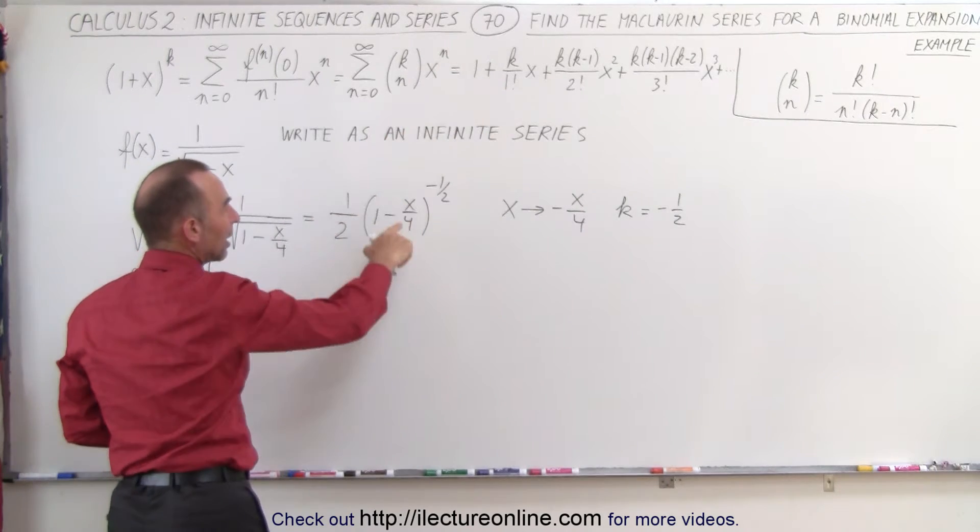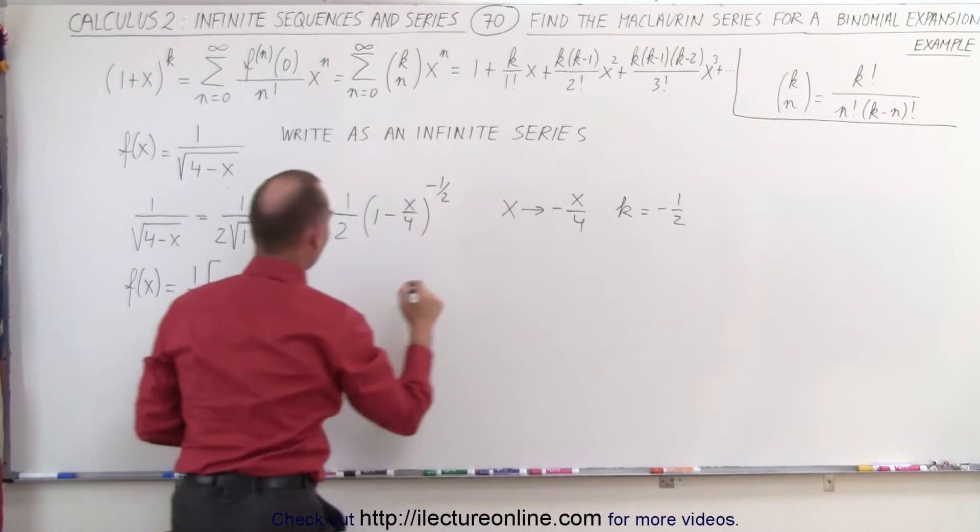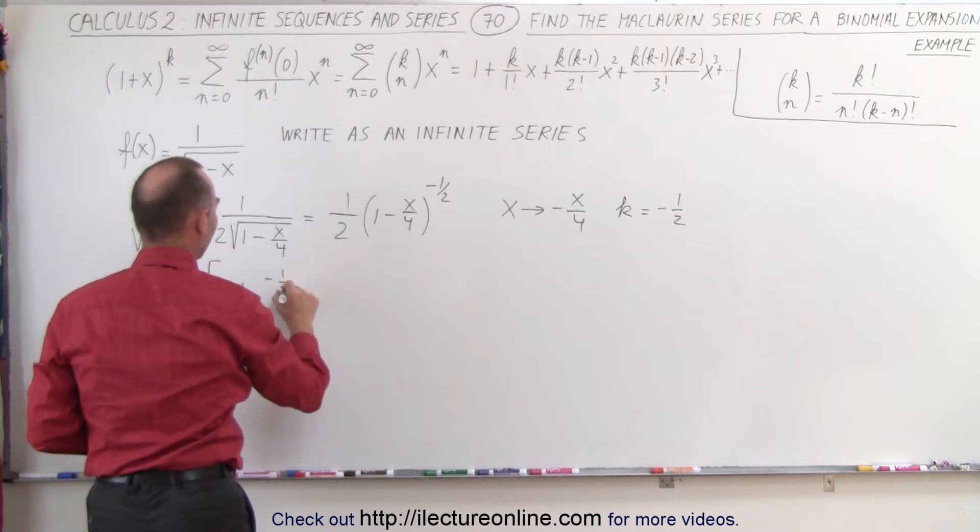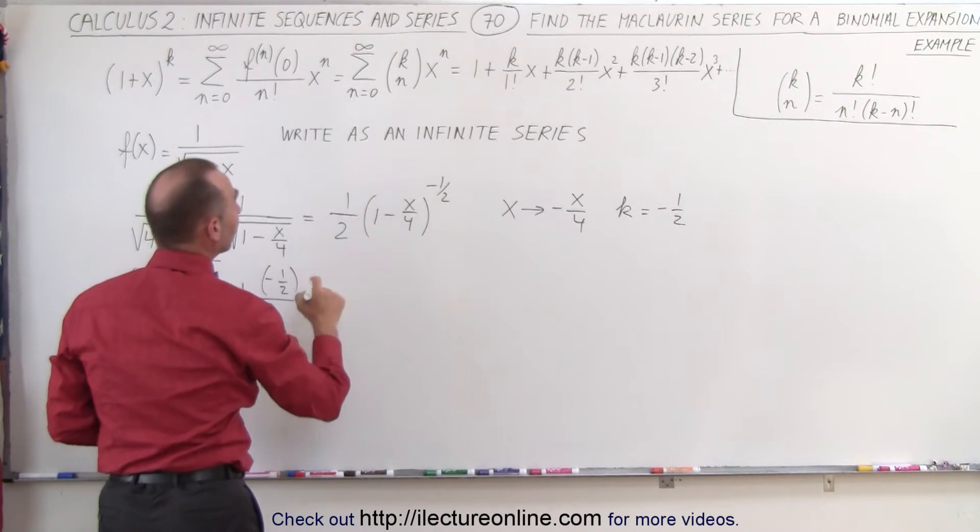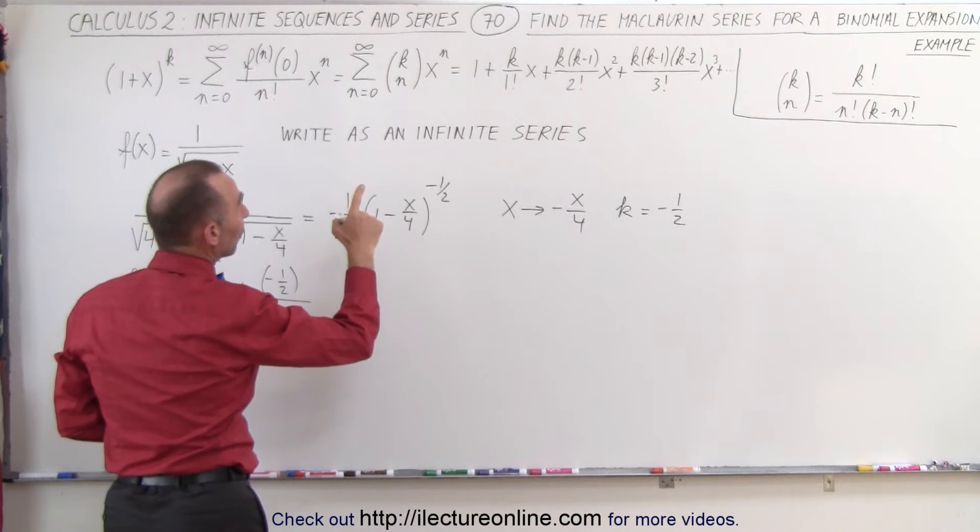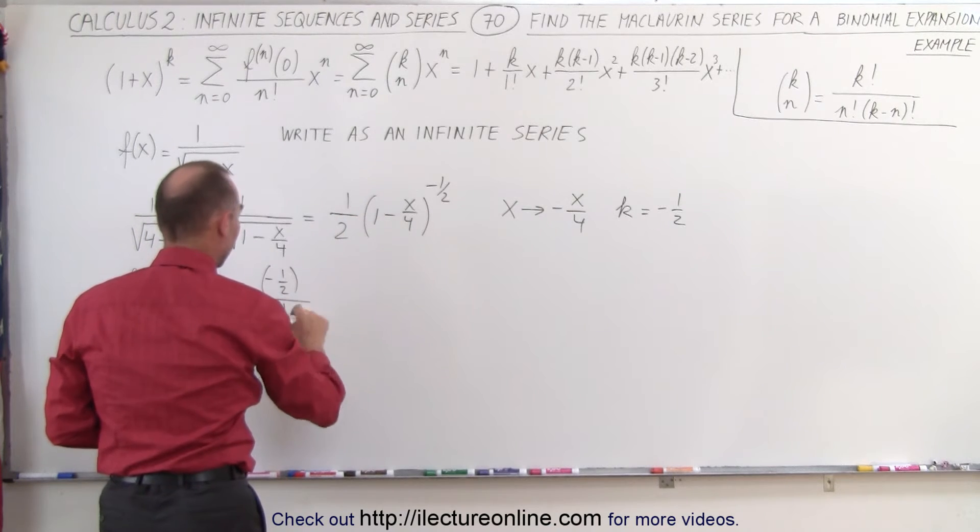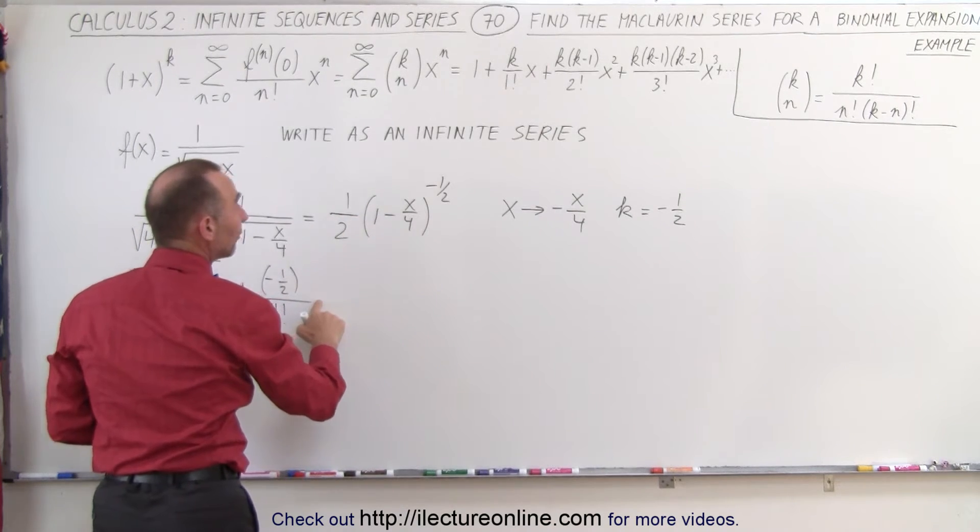Then we have plus k. Now k is minus 1 half. So we write minus 1 half divided by 1 factorial and this becomes instead of x we're going to write minus x over 4.